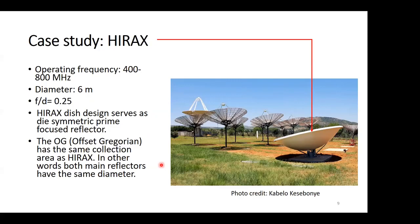I'm making an offset Gregorian that will give you the same collection area as if it was in the same array setup. So I'm using the same diameter for my main reflector.